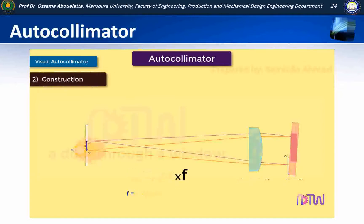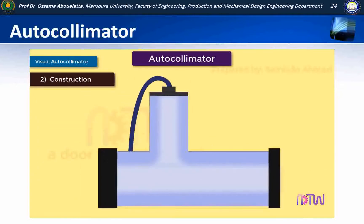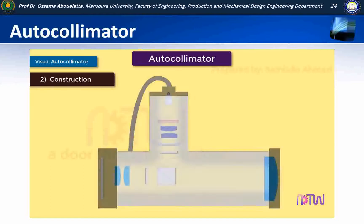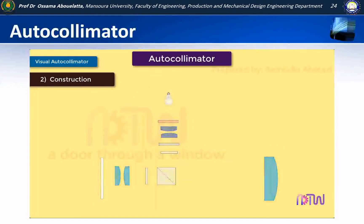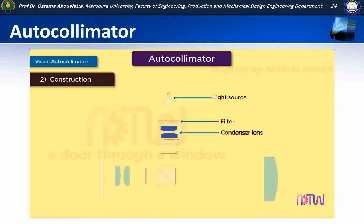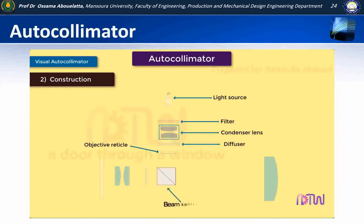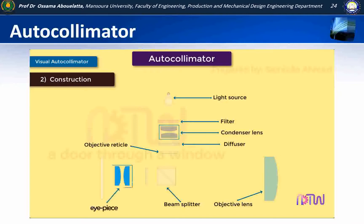Let us see the construction of the autocollimator. It consists of the following parts: light source, filter, condenser lens, diffuser, objective reticle, beam splitter, objective lens, and eyepiece.